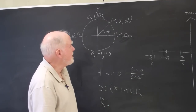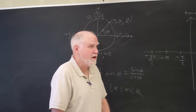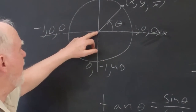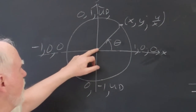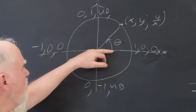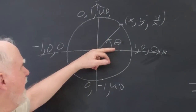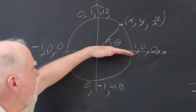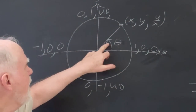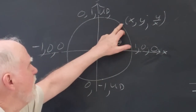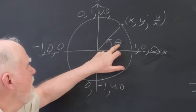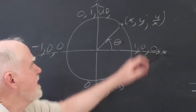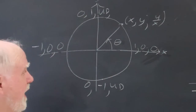Today I'm going to graph the basic tangent function. Here's our old friend, the unit circle. If I take a ray from the origin to the outside of the circle, it will create an angle theta where this ray is the terminal side and the x-axis is the initial side. The cosine of theta is the x value on the unit circle, the sine of theta is the y value, and y over x is the tangent of this theta.